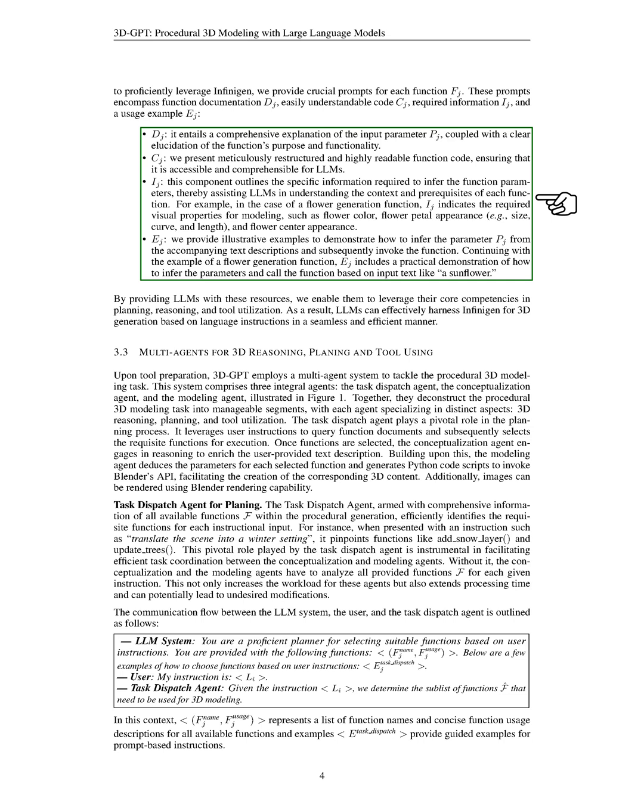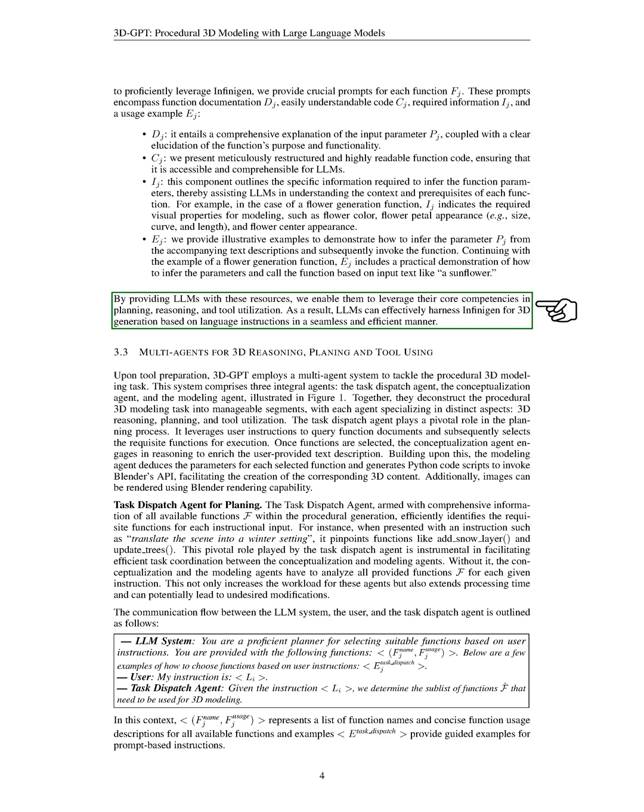The function documentation provides a comprehensive explanation of the input parameters and a clear explanation of the function's purpose and functionality. The code is meticulously restructured and highly readable, ensuring that it is accessible and comprehensible for LLMs. The required information outlines the specific information needed to infer the function parameters, assisting LLMs in understanding the context and prerequisites of each function. For example, for a flower generation function, the required information indicates the visual properties needed for modeling, such as flower color, petal appearance, and flower center appearance. The usage example provides illustrative examples to demonstrate how to infer the parameter from the accompanying text descriptions and subsequently invoke the function. By providing LLMs with these resources, we enable them to leverage their core competencies in planning, reasoning, and tool utilization, allowing them to effectively use Infinegan for 3D generation based on language instructions.